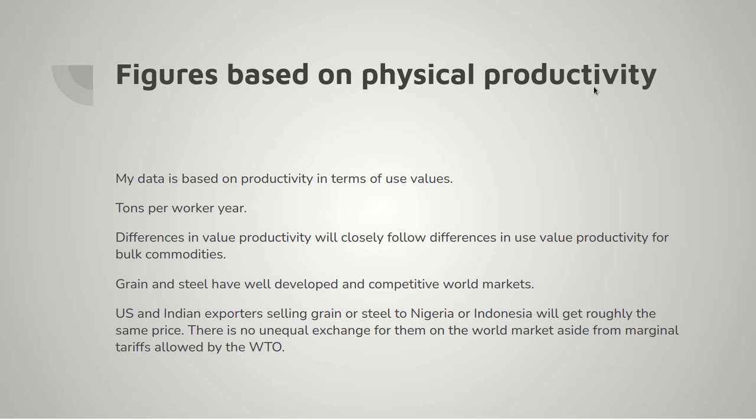Both grain and steel have well-developed and competitive world markets. If a US or Indian exporter is selling grain or steel at some third country like Nigeria or Indonesia, they will both get roughly the same price. If US steel and Indian steel are both sold in Nigeria, they can't deviate substantially in price, and there will be no unequal exchange in the world market — barring such effects as NAFTA, where Indian steel would meet a slightly higher tariff going into Mexico than US steel. But these tariffs under WTO terms are fairly marginal, and certainly nothing like the order of magnitude required to explain the differences in GDP per capita between India and the USA.